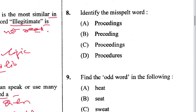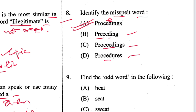Question 8: Identify the misspelled word. 'Proceeding' should have double-E. 'Preceding' is correct, 'proceeding' is correct, 'procedure' is correct. A is the answer — the misspelled word is 'proceeding' in the option.